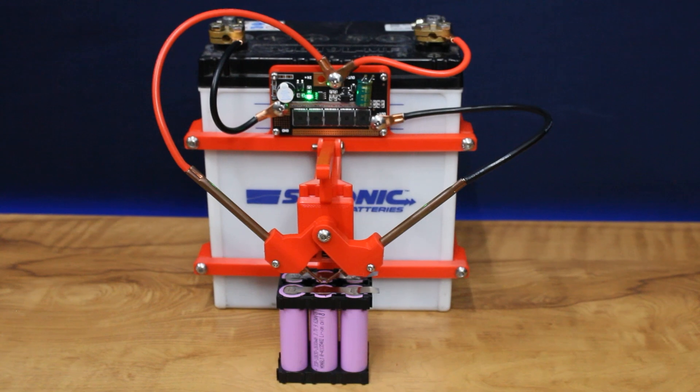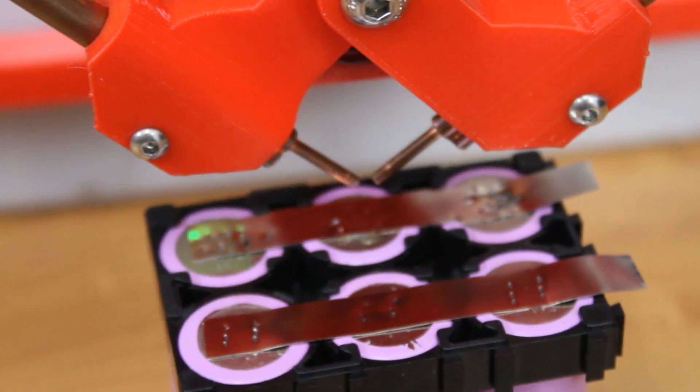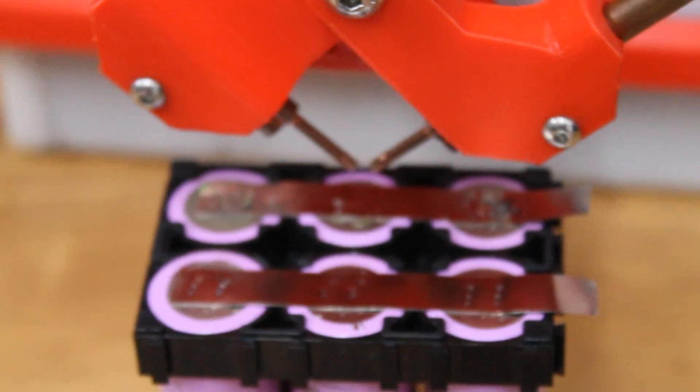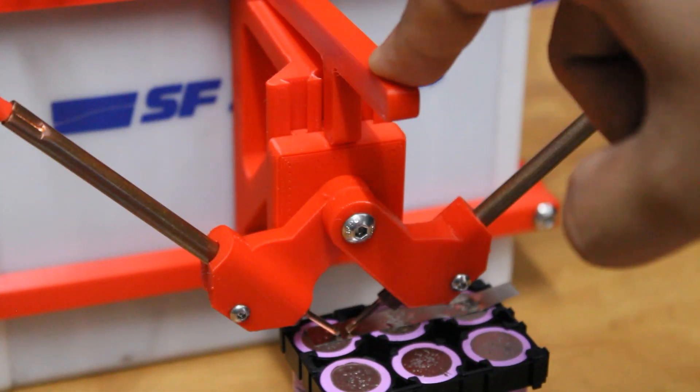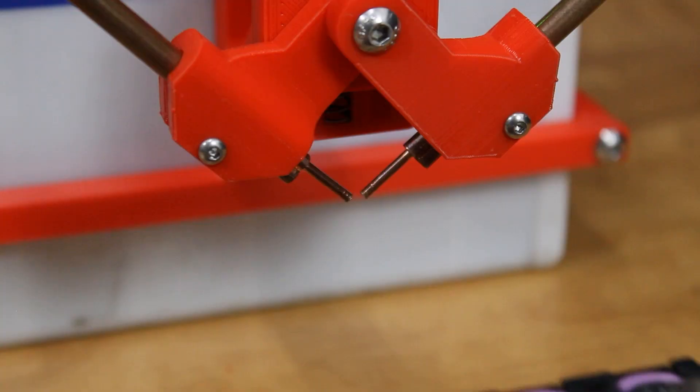To make using this kit easier, I have made this simple 3D printed battery mounted spot welder, which holds the probes in place, is mounted onto the battery, has a downward press mechanism with a spring and a lever, and can be operated easily with one hand.